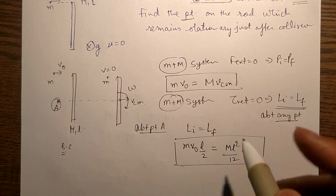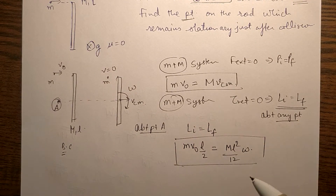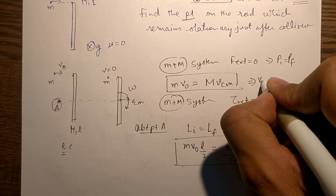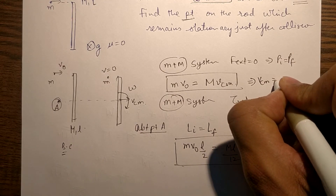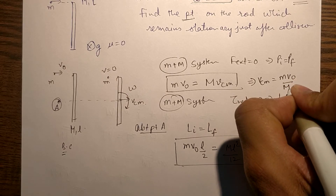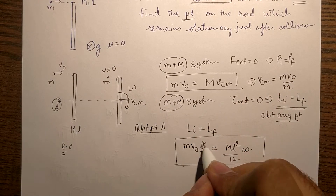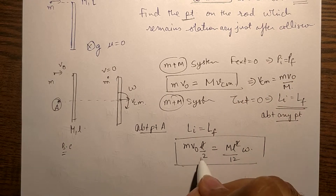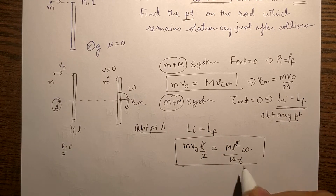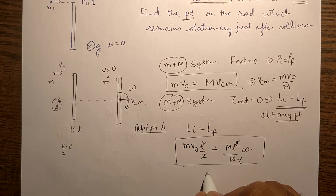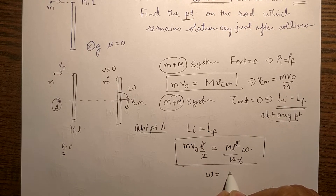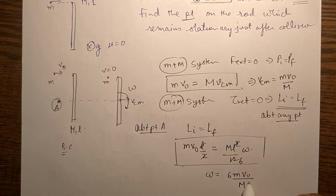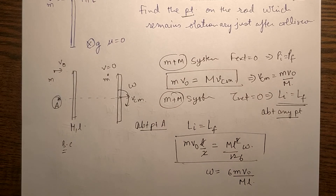Using these two equations, we can find Vcm and omega. From the first equation: Vcm = mV₀ / M. Simplifying the second equation, omega = 6mV₀ / (ML). Very simple.